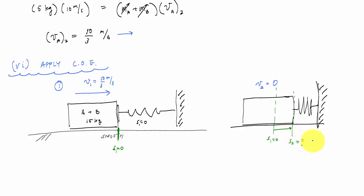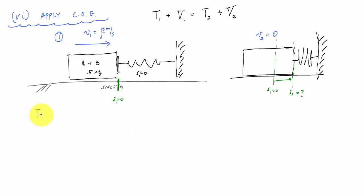So now we're going to apply the conservation of energy. The conservation of energy is the kinetic energy at one plus the potential energy at one is equal to the kinetic energy at two plus the potential energy at two. I have kinetic energy at one, so T_1 is equal to one half m, m is 15 kilograms, and then I have v_1 squared. Do I have any potential energy here at the first stage? No, because my spring is unstretched.